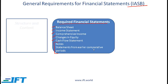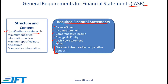Moving to structure and content: accounting standards require that the classified balance sheet distinguish between current and non-current assets and liabilities. There is minimum specified information that must be presented on the face of the balance sheet — for example, cash and cash equivalents, and property, plant and equipment. Additional details are then presented in the notes or footnotes, where there are also certain minimum requirements.